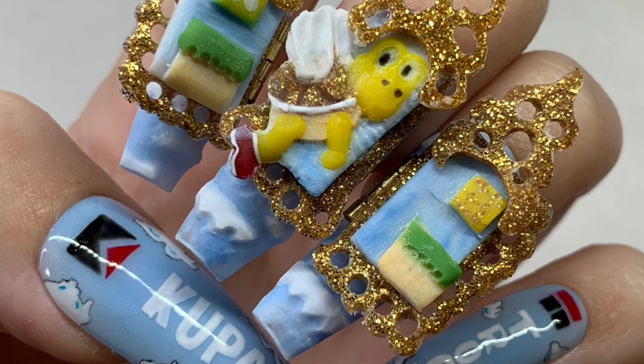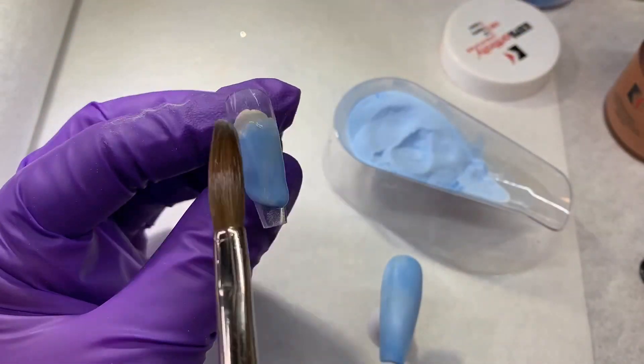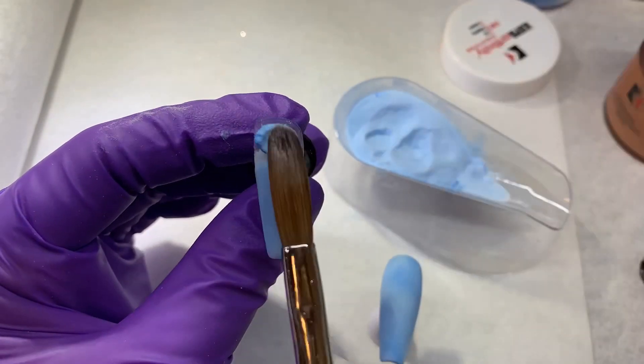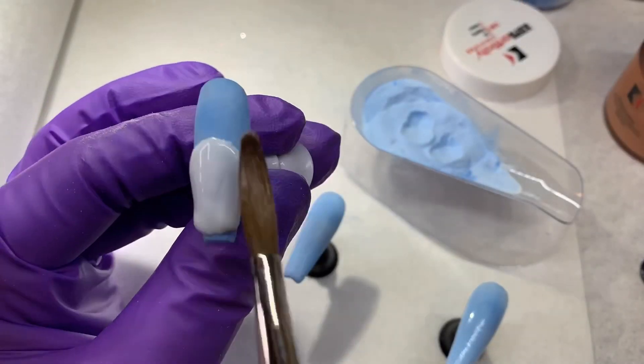My inspiration for this challenge was none other than Koopa Troopa himself. Step one in making these nails, we are going to lay down a light blue color of acrylic very thin on the nail and completely cover it with white acrylic.